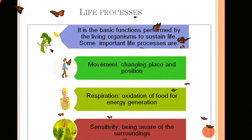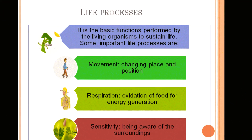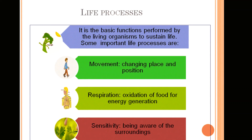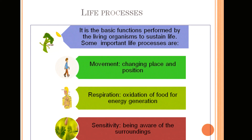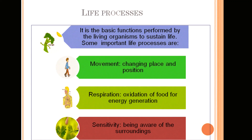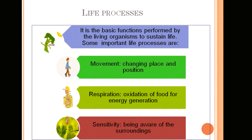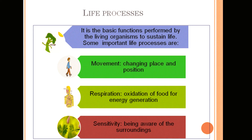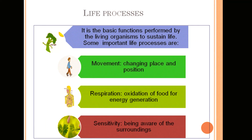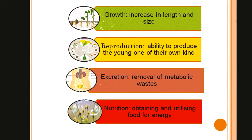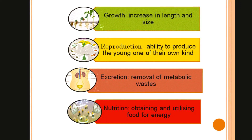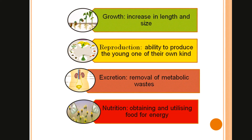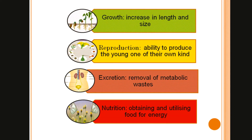Like nutrition, there are many other processes that help in maintaining life. For example, movement — the change in the position of an organism or its parts is called movement. Next is respiration — the oxidation of food for energy generation is called respiration. Sensitivity — being aware of surroundings is known as sensitivity. Growth means the increase in length and size. Reproduction is the ability to produce young ones of their own kind. Excretion is the process of removal of metabolic wastes.